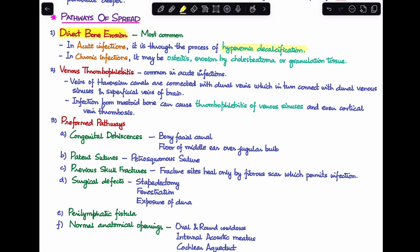The most common one is by direct bone erosion. Now how does this direct bone erosion happen? If it is a case of acute otitis media, it occurs through the process of hyperemic decalcification. And if it is a case of chronic otitis media, it can either occur by osteitis or erosion by cholesteatoma or the granulation tissue. So direct bone erosion is the most common pathway of spread in a case of CSOM complication.